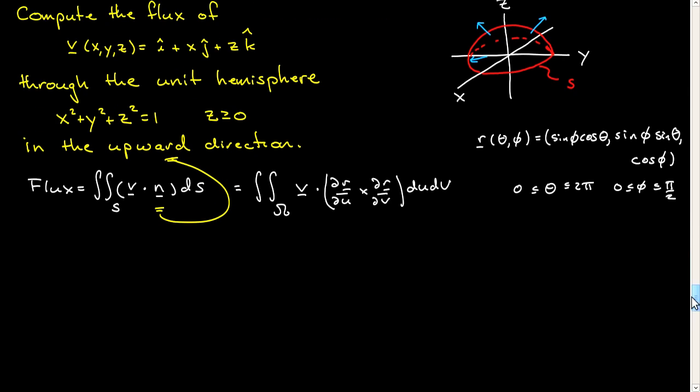So I think I'll skip some of the steps and just let you work out or go back and look at previous screencasts and examples that dr d phi cross dr d theta will give you sine squared phi cosine theta in the i-hat direction. Similar, sine squared phi sine theta in the j-hat direction, and then plus cosine phi sine phi in the k-hat direction.